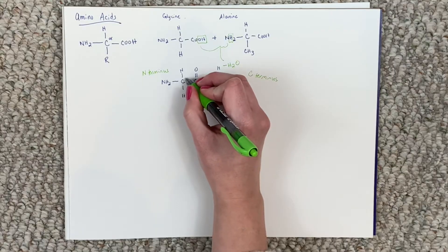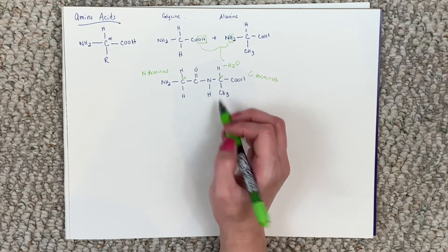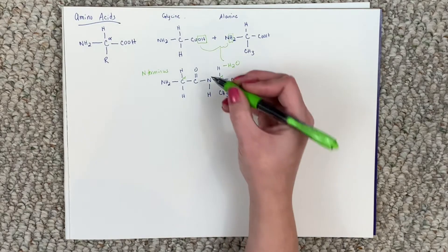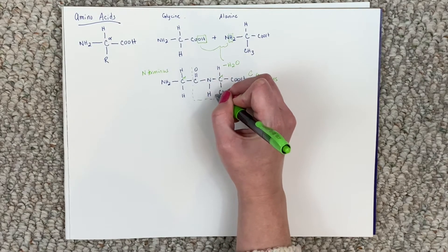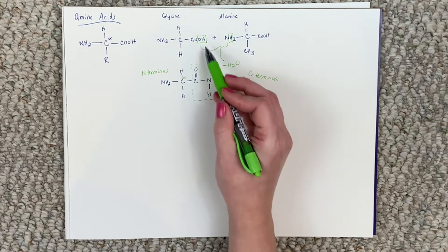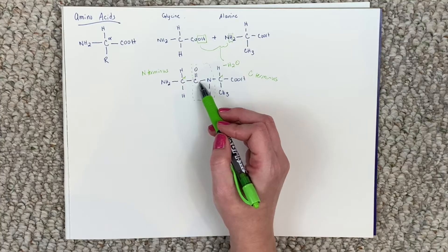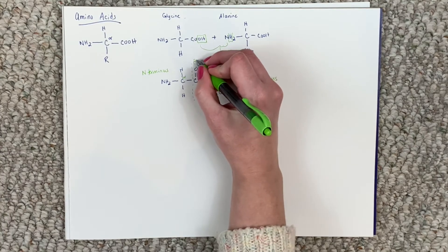So we have two alpha carbons, right? One, two, one of glycine and one of alanine. And the peptide bond, let me sort of put that in a circle. So this is where the peptide bond is. It's where we used one of the carboxylic acid groups and connected it to the amine group. Okay, so this is the peptide bond.